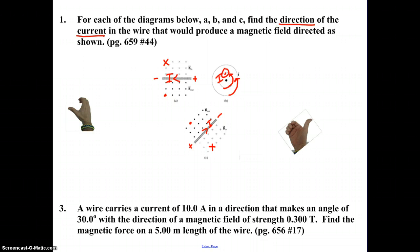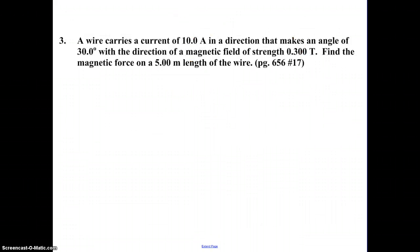Let's take a look at number three. A wire carries a current of 10 amps, that's I, in a direction that makes an angle, theta, of 30 degrees, with the direction of a magnetic field of strength 0.3 tesla, that's B. Find the magnetic force, FB, on a 5 meter length, L, of the wire.